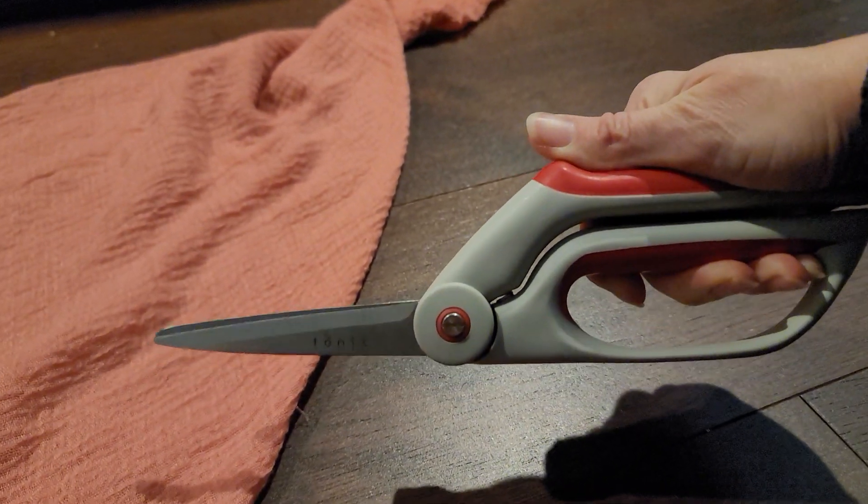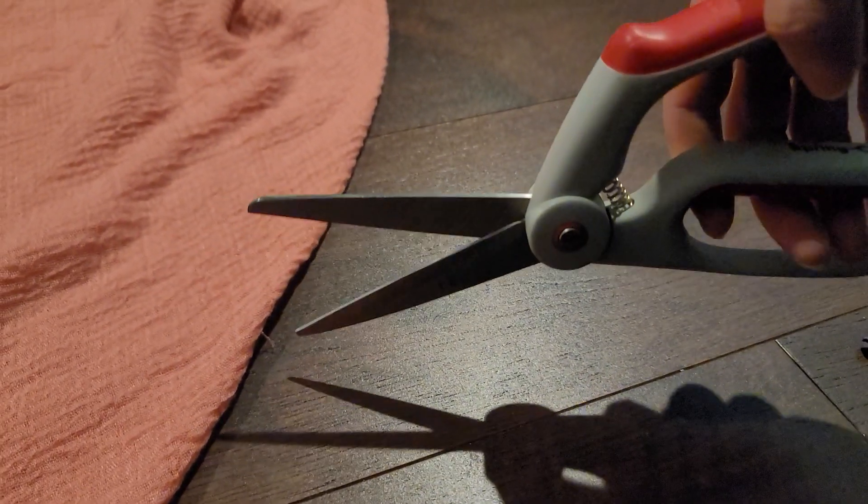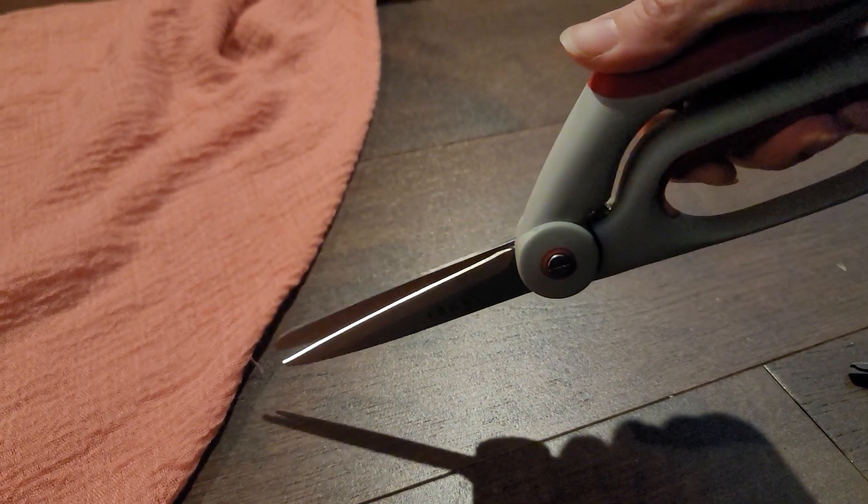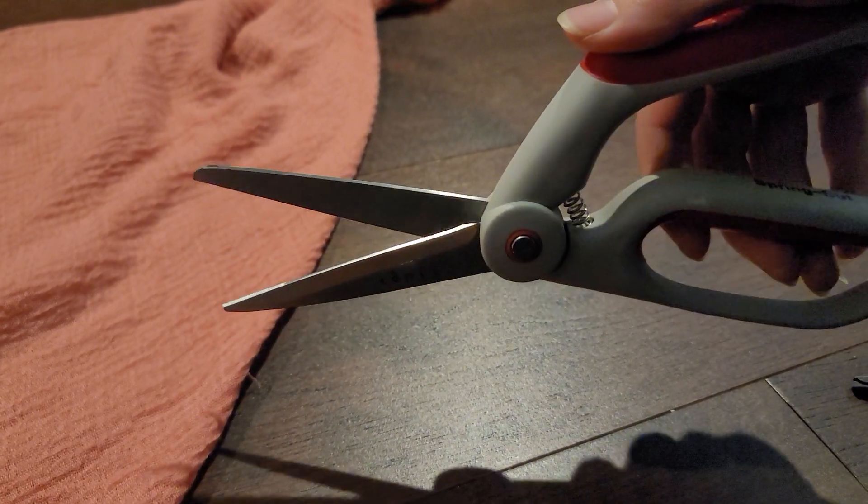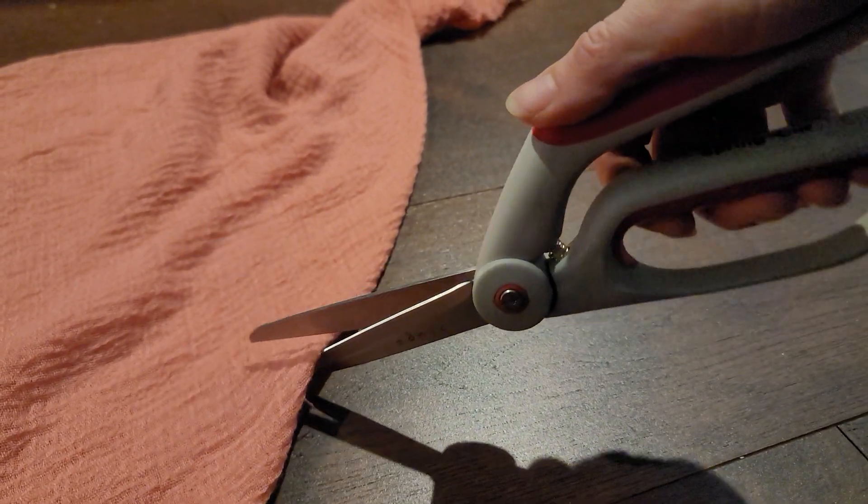But fabric shears are offset with the blade only on one edge of it. So every time you open it, you're only moving one blade. In that way, your fabric stays more in the same spot.